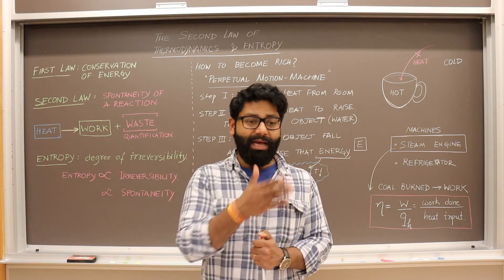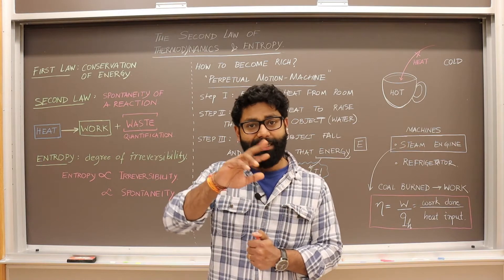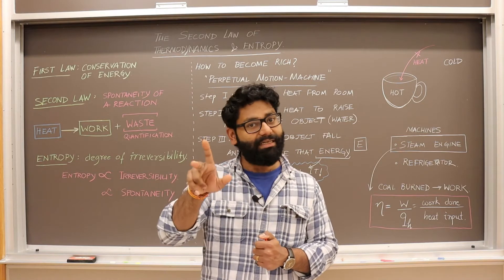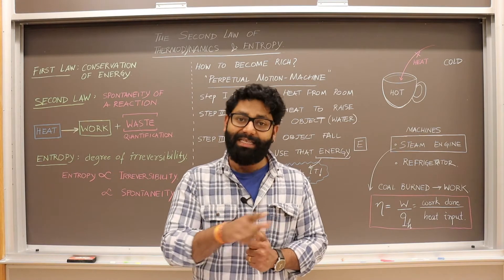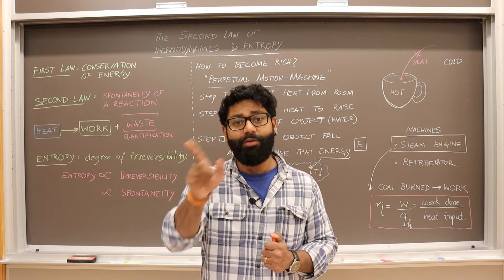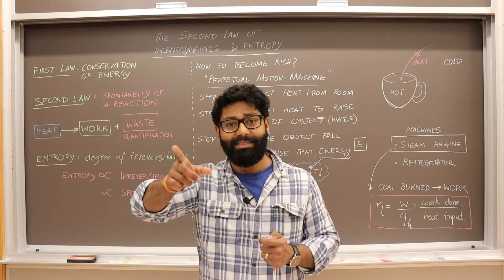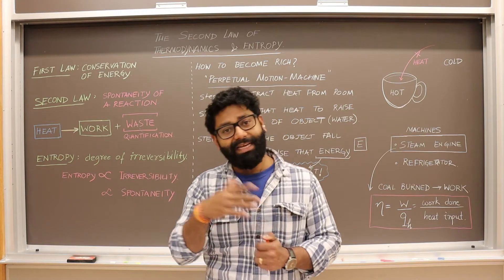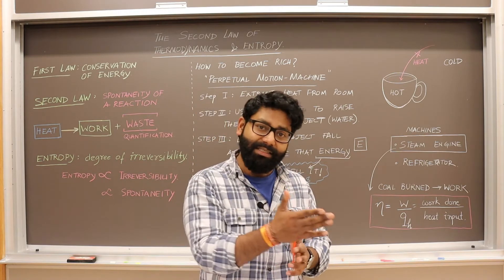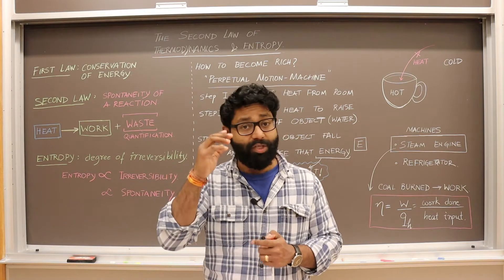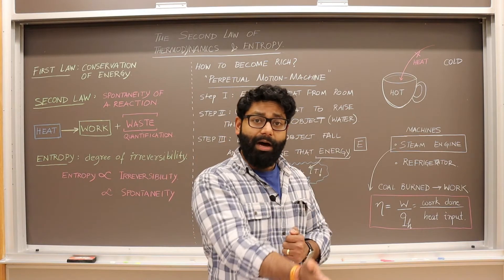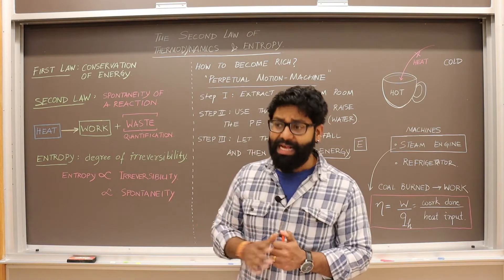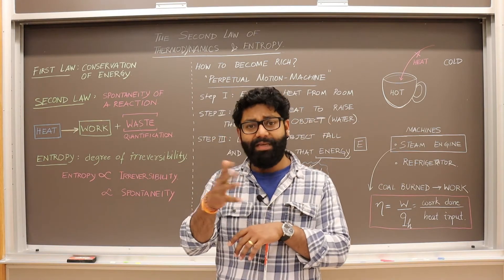There can be three kinds of systems. An isolated system, in which neither matter nor energy can be exchanged between the system and the surroundings. There can be closed systems, in which matter cannot be exchanged but energy can flow freely. And there can be an open system, in which both energy and matter can interchange.